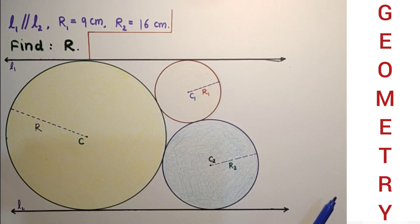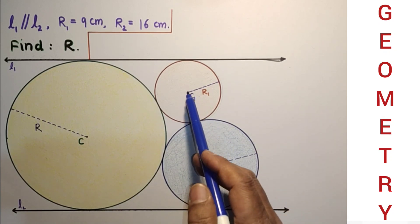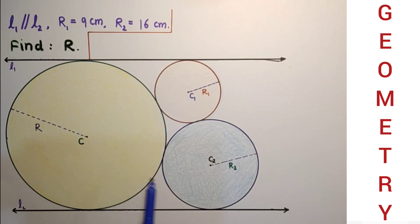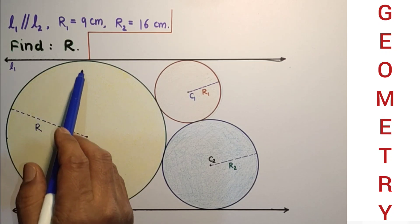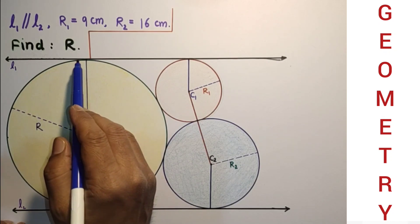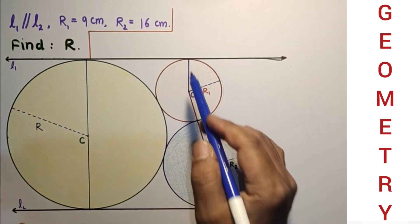To solve this problem we need some constructions: joining C1, C2, from C1 join this point of contact and from C2 join this point of contact, and from this central point join these two contacts which will be a straight line. Let's name these points A, B, P, Q.